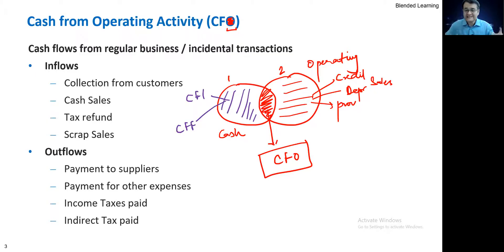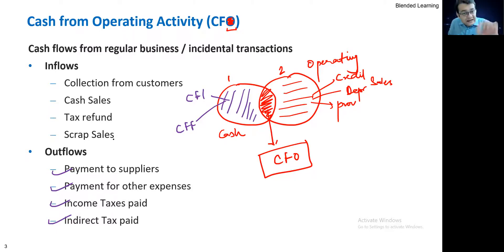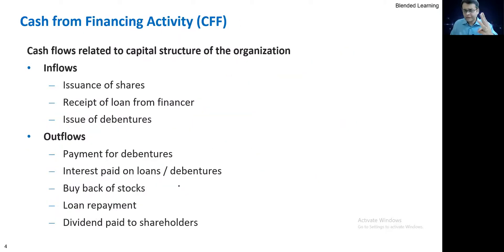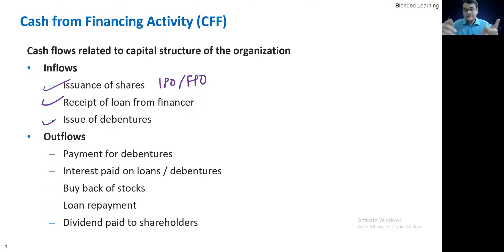A few examples: direct taxes, indirect taxes — any kind of taxes paid is operating. Payment to suppliers, wages, rent — everything is operating. Scrap sales proceeds, though secondary, are still operating — that goes into your inflows. Collection from customers, cash sales, income tax refund — day-to-day operating in cash. Then financing activities: equity, debt, preference — raising money from them, issuance of shares like an IPO or FPO, receipt of loan from financiers. Outflows are repayment to any of these three and payment of interest or dividend. Under investing: when I buy machinery it may seem like an inflow is happening into the asset, but I'm talking about the cash. In investing activity, whenever you need an inflow of cash the asset must go out — things like sale of old plant and machinery or sale of investments. When you buy a long-term asset, that's when cash outflow happens.